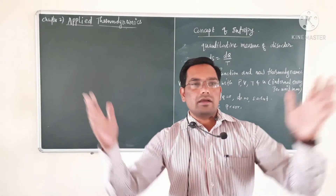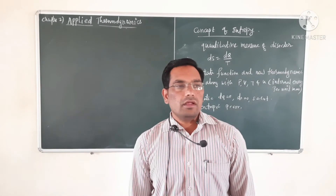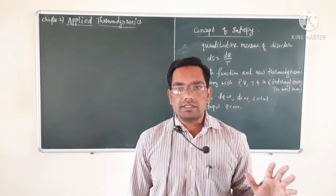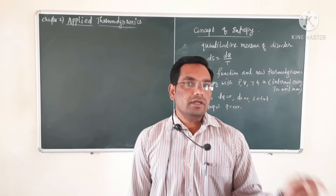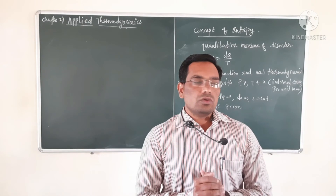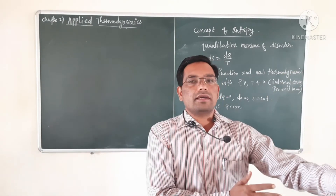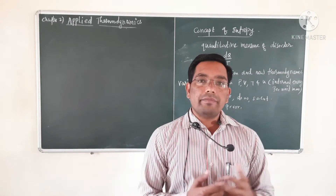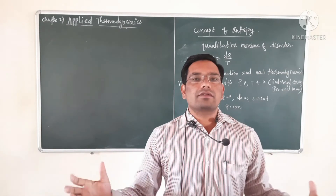Take a simple example: a class full of students where each student is sitting on a single bench. If you change the sitting arrangement of students, the entropy of that system is changed. If only a single student is there, or 50% of students are present, or all students are present, the entropy is different in each case. Entropy depends upon the number of molecules present in the system and how those molecules are arranged, along with many more factors.